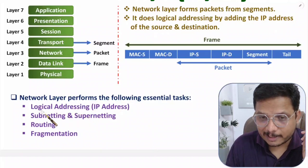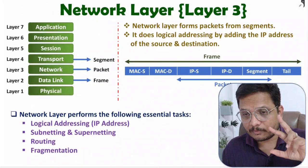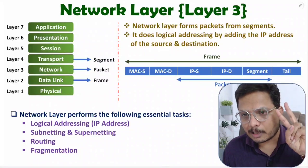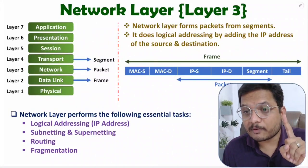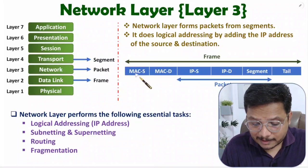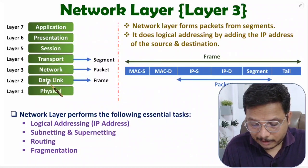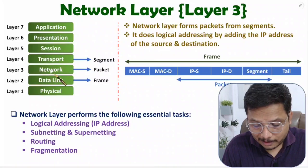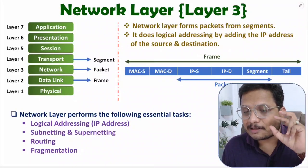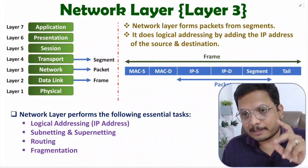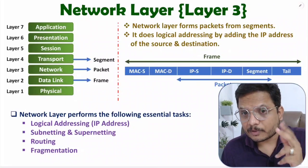The first essential task performed by network layer is logical addressing. In computer networks there are two types of addressing: physical addressing and logical addressing. Physical addressing is done by MAC address, which is added at the data link layer. Logical addressing is done by IP address at the network layer, which is layer number three.